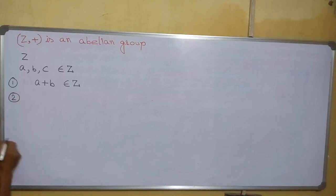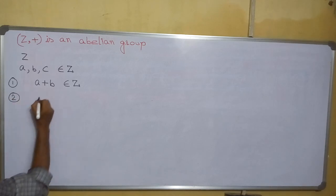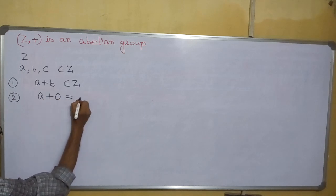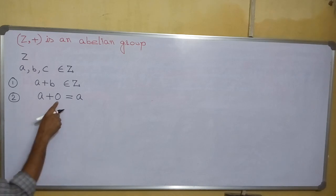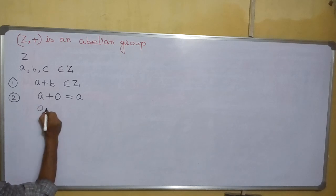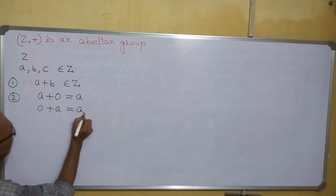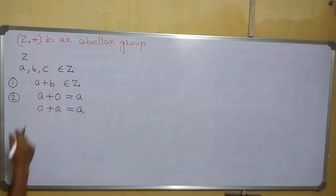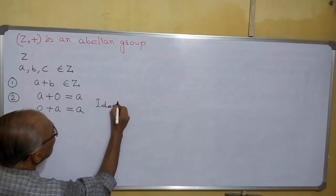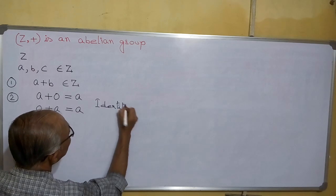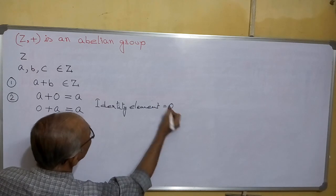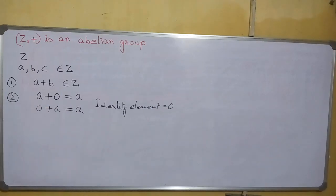Next, we will find the identity element. We know A plus 0 equals A — that is, 0 is called the right identity element. Similarly, 0 plus A is also equal to A. Hence, 0 is called the left identity element. In other words, the identity element is 0. So we have found an identity element.